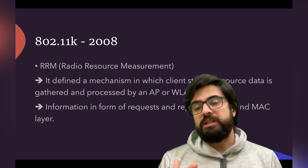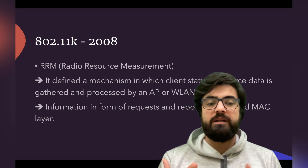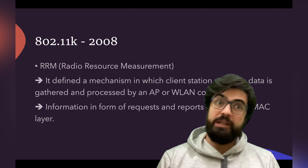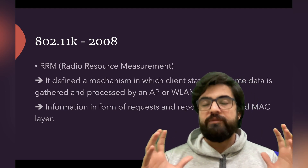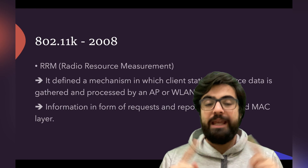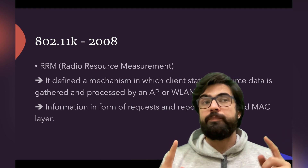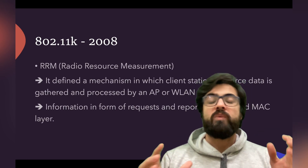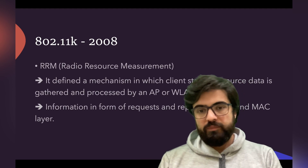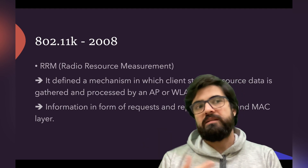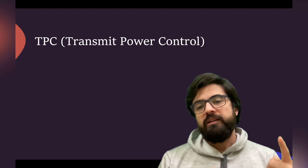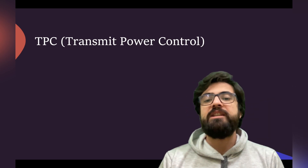The data gathered is related to the physical layer and the MAC layer — a sublayer of Layer 2. The AP or WLC collects this information and uses it to manage everything in the network. There are four main categories of data: TPC, client statistics, channel statistics, and neighbor reports.